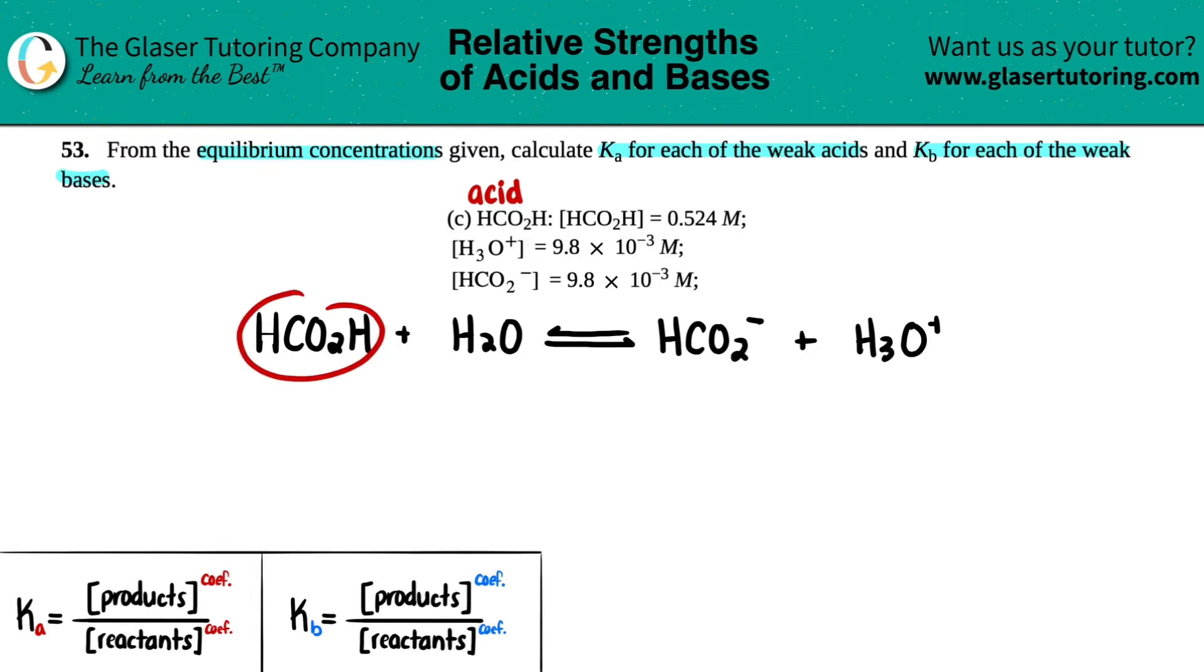So they told us that my HCO2H is 0.524 molarity. And then each one of these, HCO2- and H3O+, they're both 9.8 times 10 to the negative third molarity. But now the question is, what happened to the water? Why didn't they give me a number for the water? Remember, water is a liquid, and no liquids or solids are allowed in any K value. Ka, Kb, Kc, Kp. No liquids are allowed. So in this case, remember, any K value is just going to be products raised to the coefficients divided by the reactants.